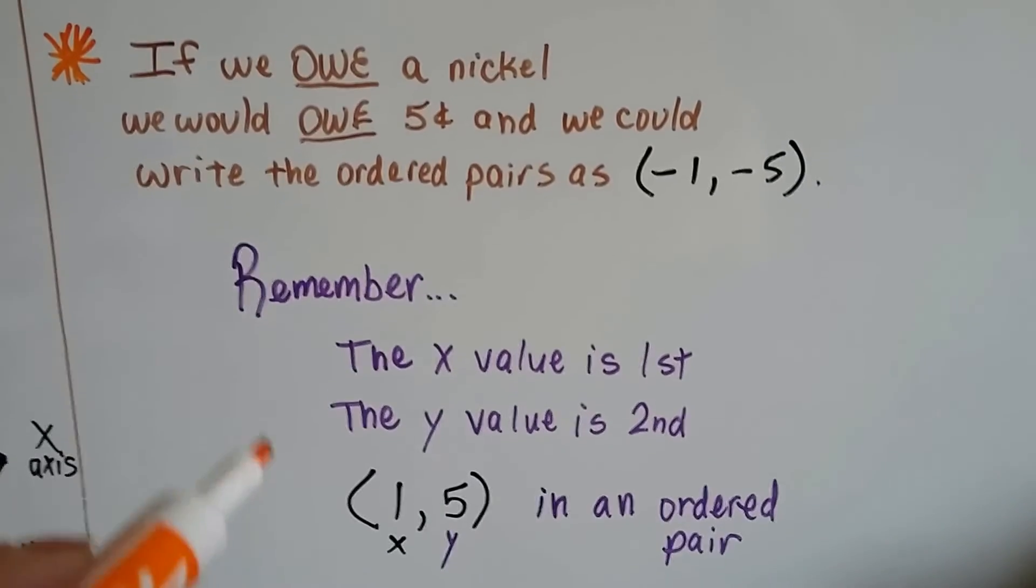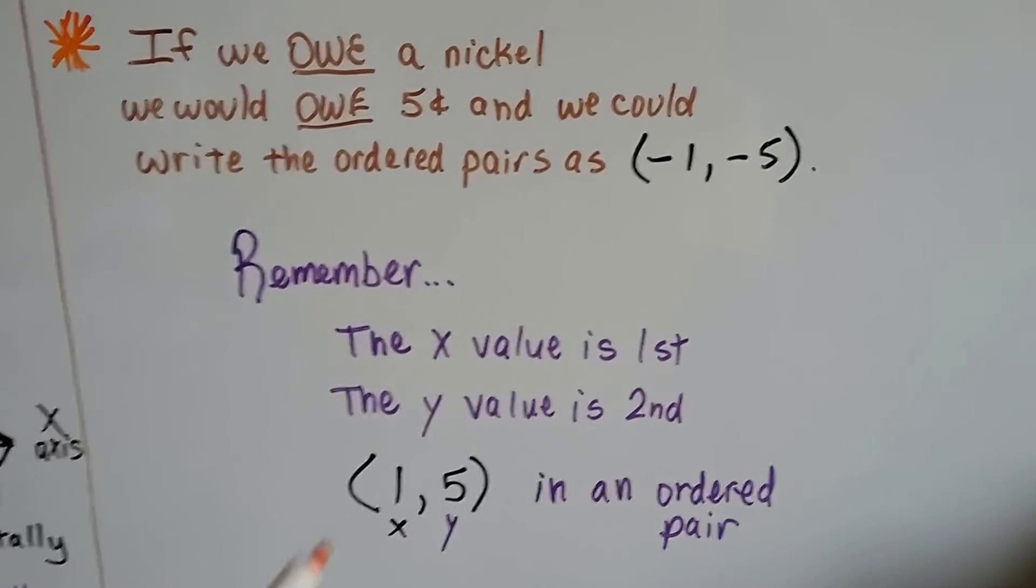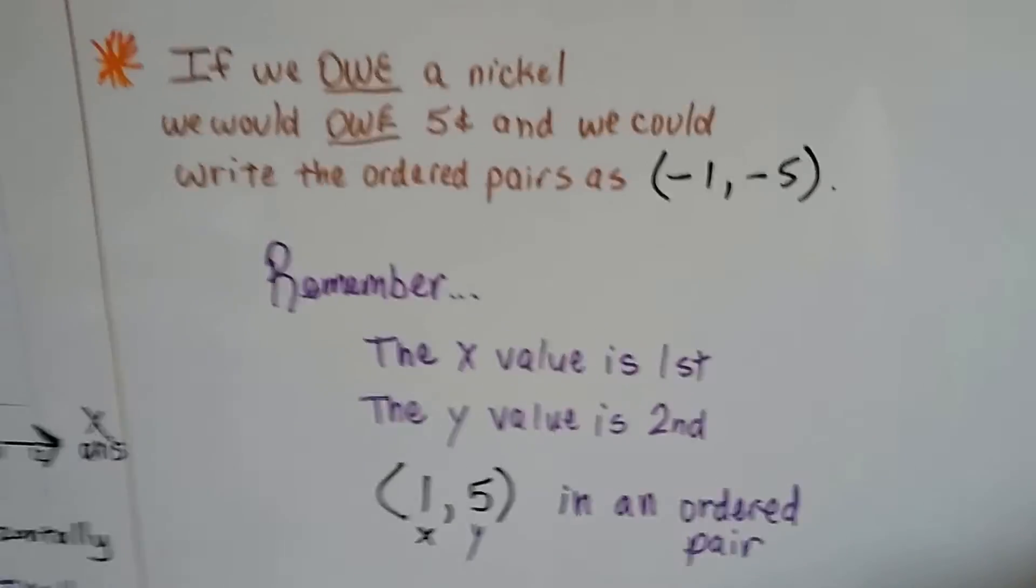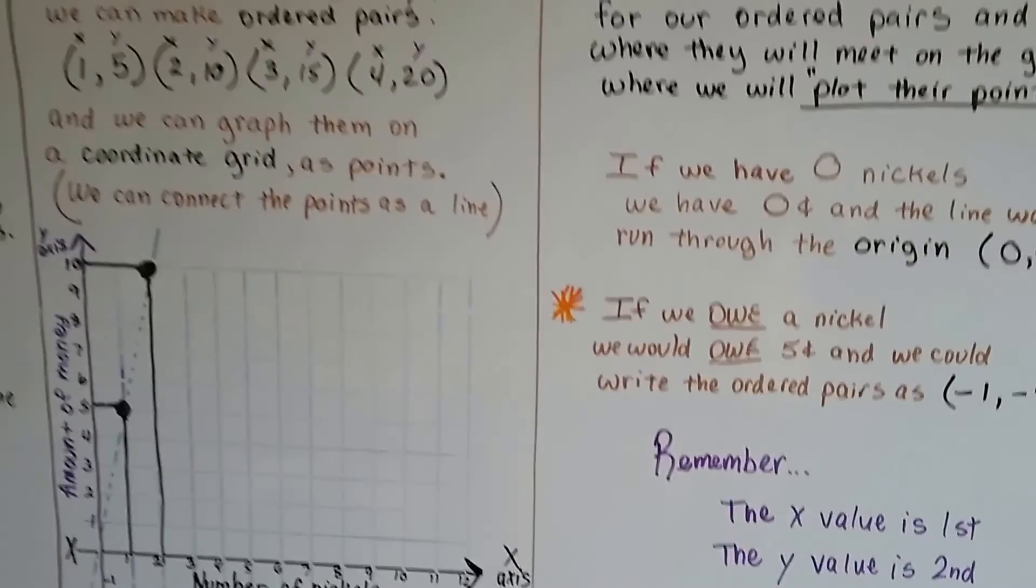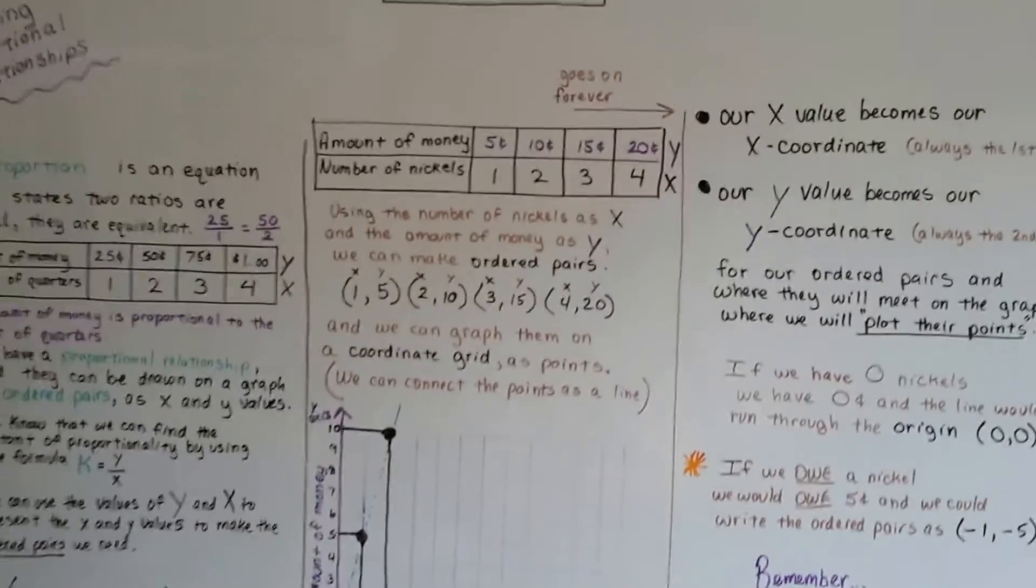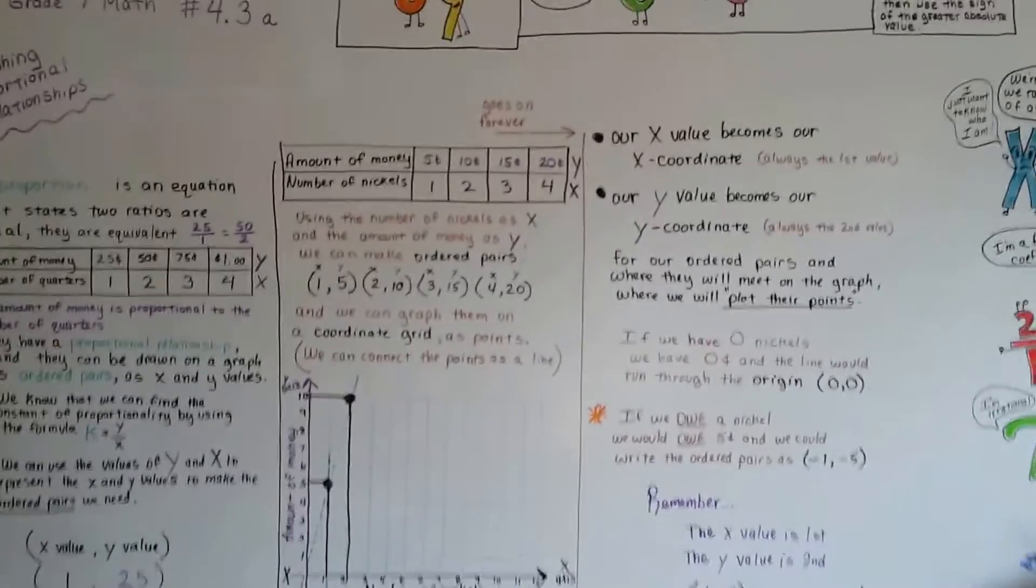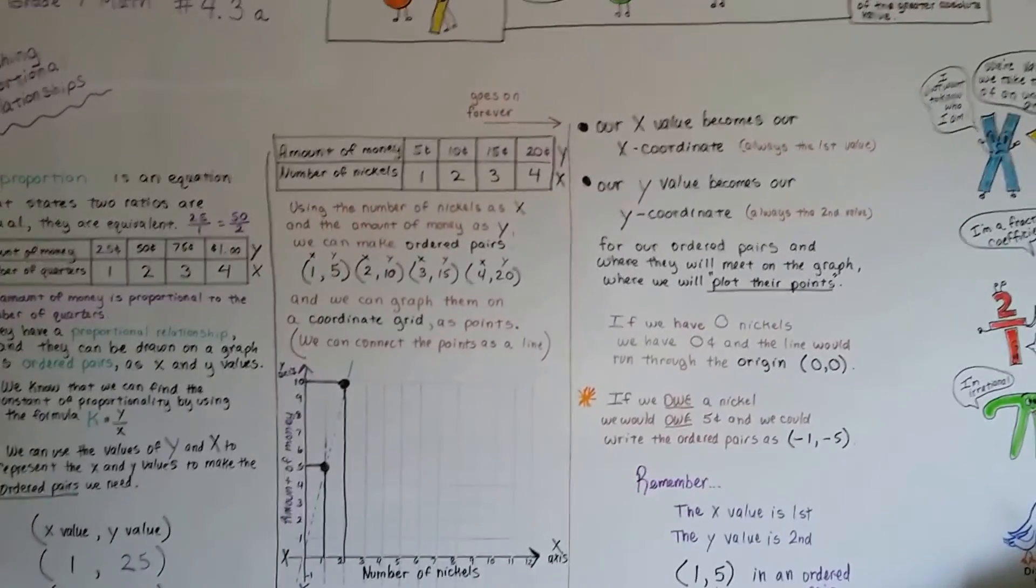So remember, the x value is the first, the y value is the second one. This is x, then y, in an ordered pair. I'm going to continue talking about graphing proportional relationships, and I'll see you in video 4.3b. And I hope this has been helpful. I'll see you next video. Bye.